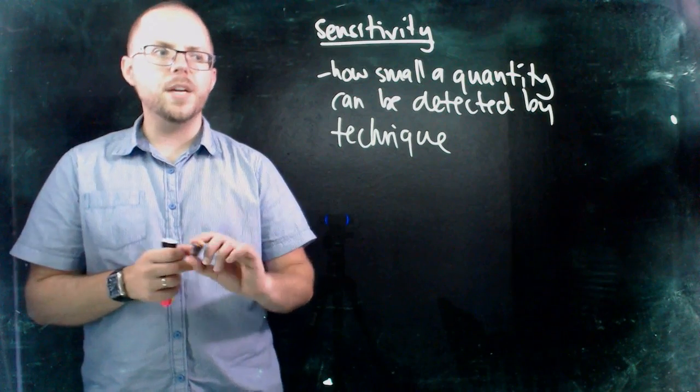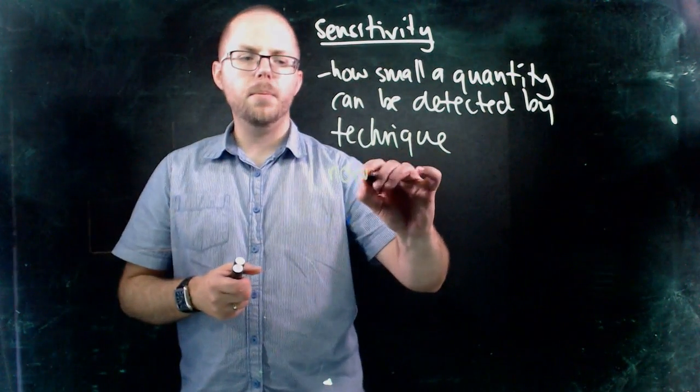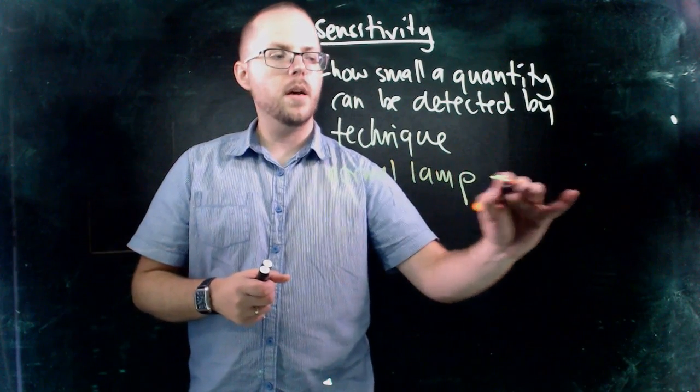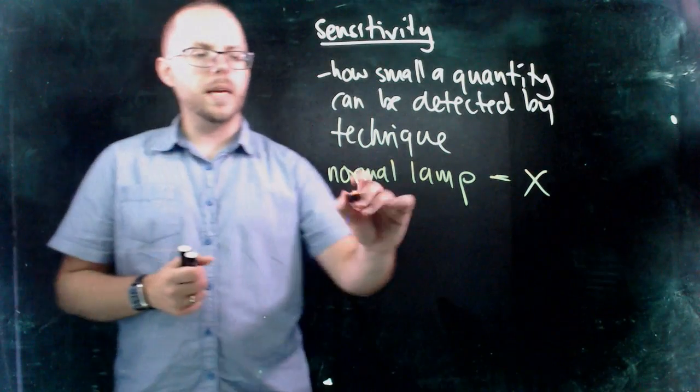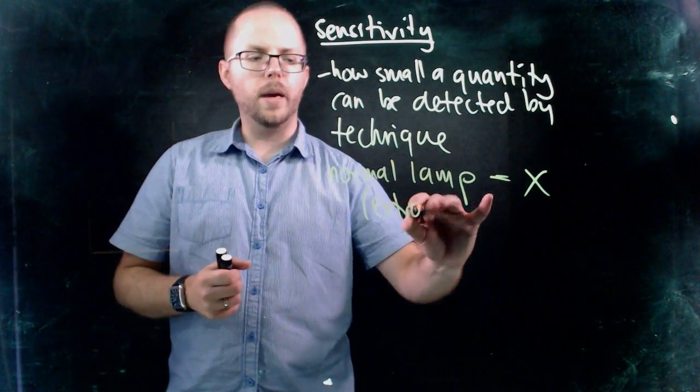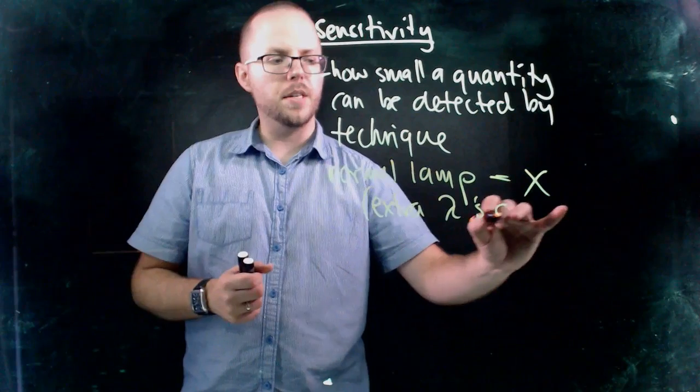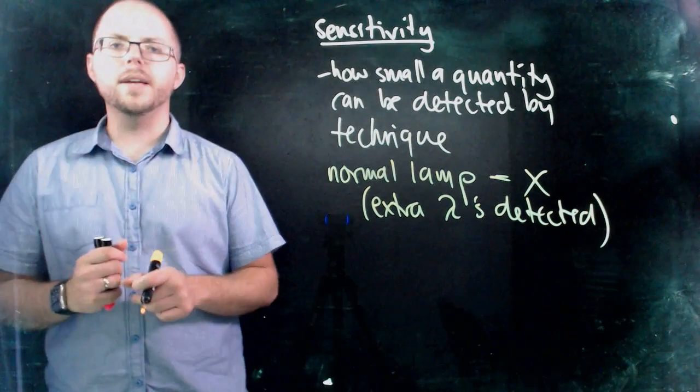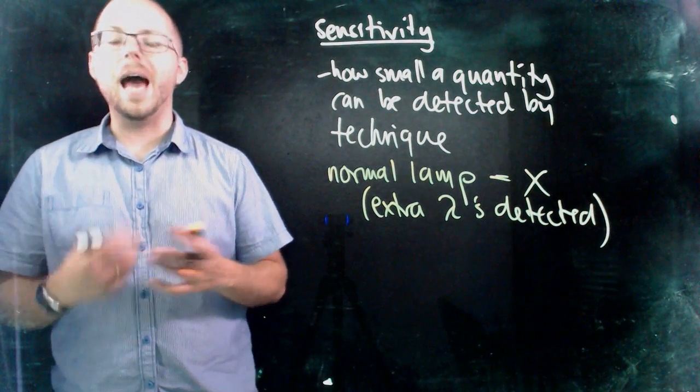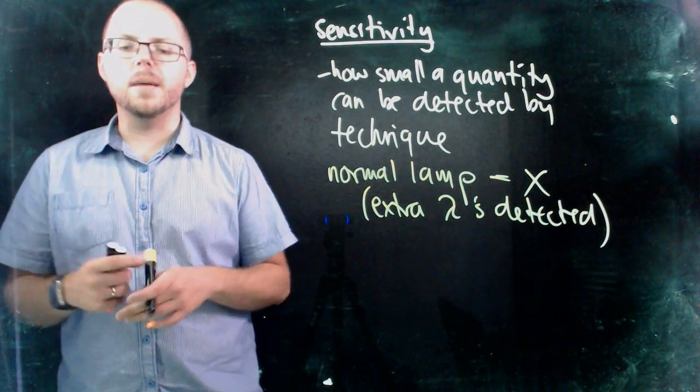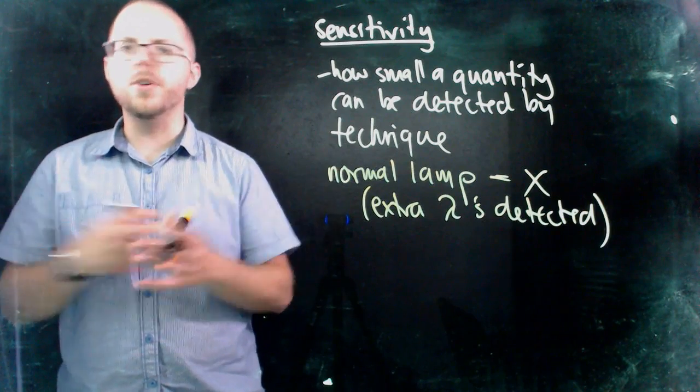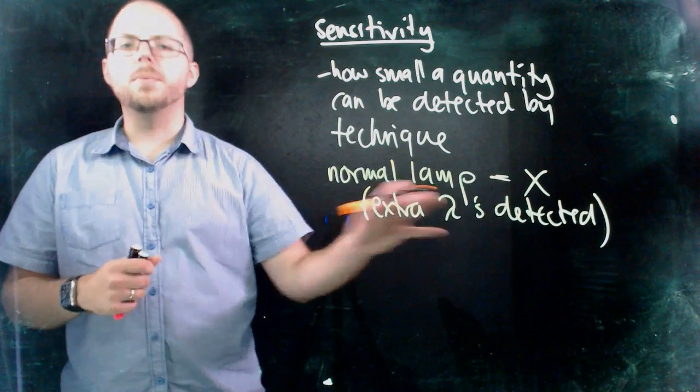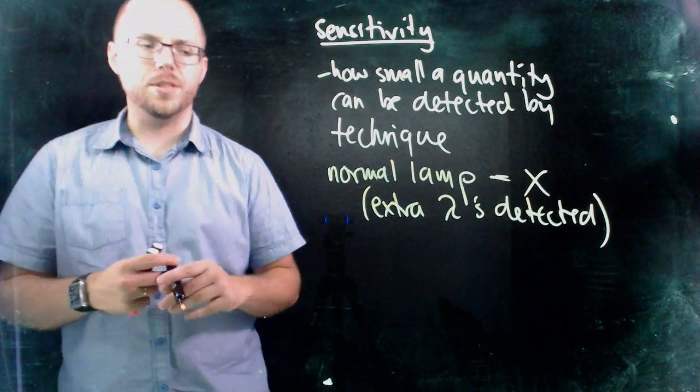And so the thing is that if we used a normal lamp with AAS, it's not very sensitive, because what we're getting is we're getting a whole lot of extra wavelengths detected. Our light source is producing a huge number of different wavelengths, there may be a whole lot of other atoms that are in our sample that are going to be absorbing those things, and so we get a massive noisy environment. You're getting very little chance of picking out the sample that you're looking for, not with any accuracy anyway.